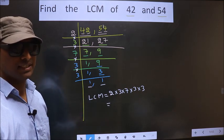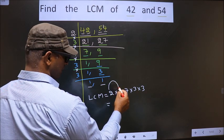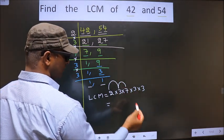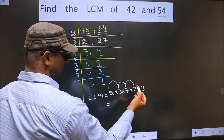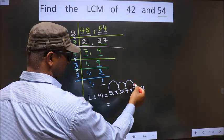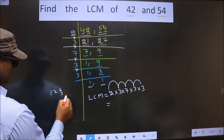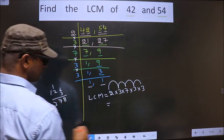Let us multiply all these numbers. That is 2 into 3, 6. 6 into 7, 42. 42 into 3 is 126. 126 into 3. 3, 6, 18. We get 3, 78.